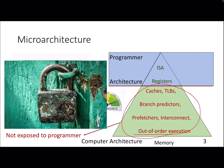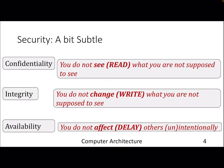These microarchitectural structures can become a source of information leakage — that will be the focus of this lecture. A bit of security background first: when we talk about something being secure, a 101-level view is that you should satisfy what is called Confidentiality, Integrity, and Availability. Confidentiality deals with not seeing what you are not supposed to see. In the context of microarchitecture, you can't load what you are not supposed to load.